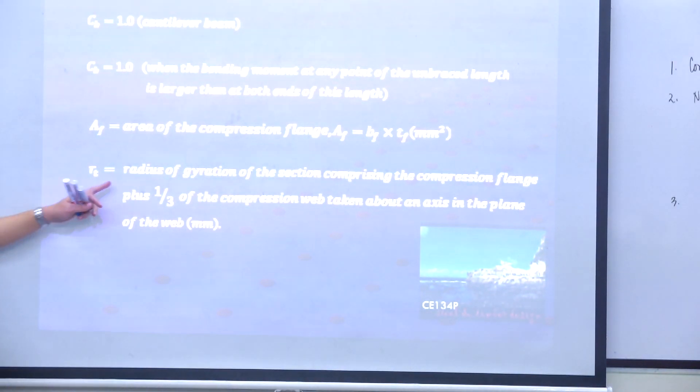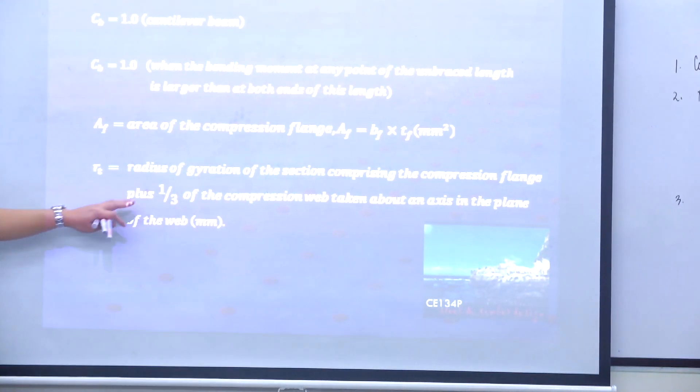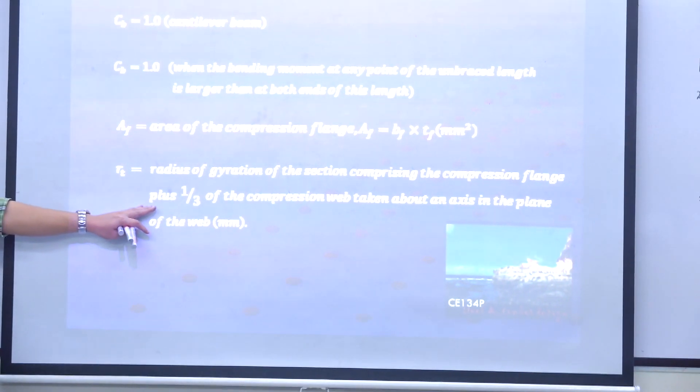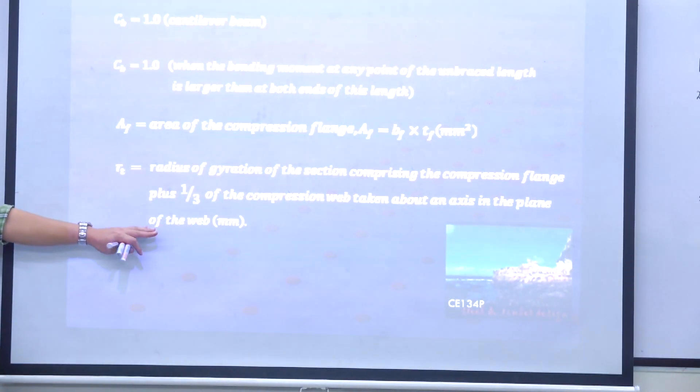R sub D is defined as the radius of gyration of the section comprising the compression flange plus one-third of the compression web taken above the axis in the plane of the web. What does it mean?